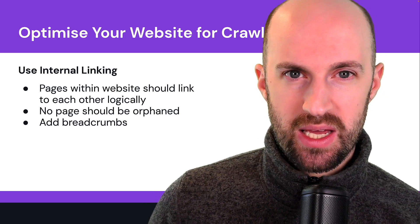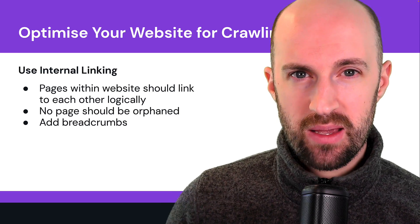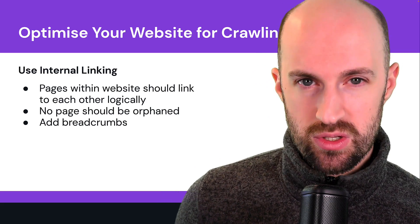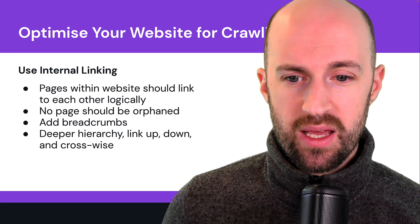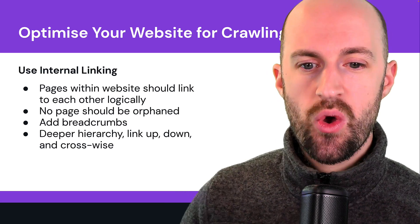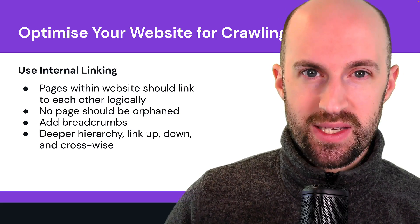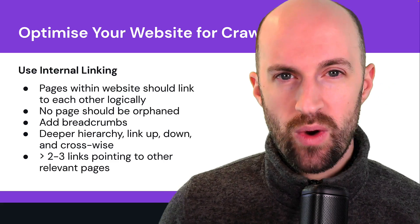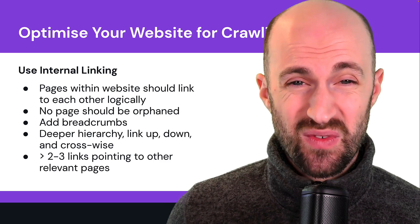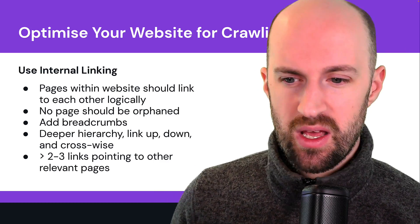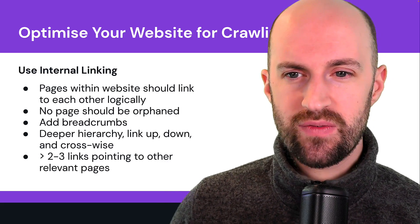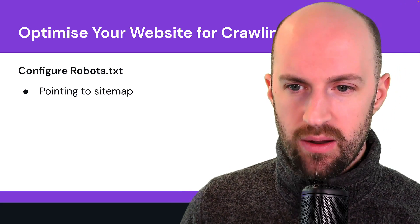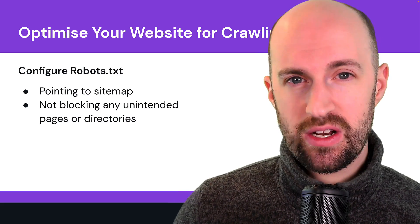If your website hierarchy has different levels, add breadcrumbs — hierarchical links that allow both users to navigate your structure and help web crawlers discover those pages. If you have a deeper hierarchy, make sure you link up to parent pages, down to children pages, or across to pages on the same hierarchical level. A rule of thumb would be about two to three links pointing to other relevant pages. Depending on the length of the content you might have more. Also, configure your robots.txt file — have it point to your XML sitemap, and make sure it doesn't block any unintended pages or directories from being crawled.